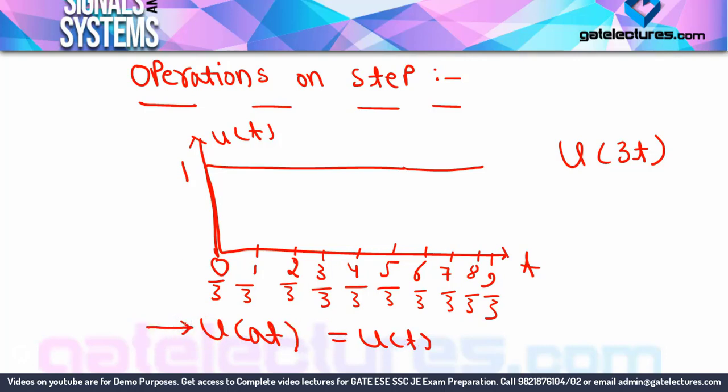This is an important exam point: if your answer comes out as u(100t) but the options show only u(t), you should select u(t) because u(at) and u(t) are the same. Remember this property carefully.